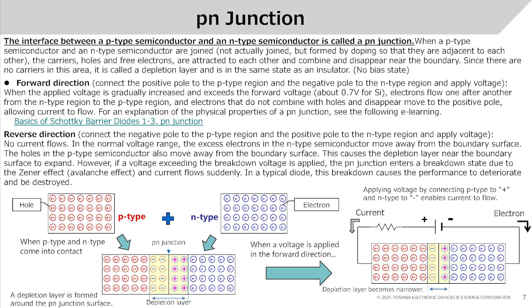No bias state. Forward direction: connect the positive pole to the p-type region and the negative pole to the n-type region and apply voltage. When the applied voltage gradually increases and exceeds the forward voltage (about 0.7 V for silicon), electrons flow one after another from the n-type region to the p-type region, and electrons that do not combine with holes move to the positive pole, allowing current to flow. For a detailed explanation of p-n junction physical properties, see the related e-learning: Basics of Schottky Barrier Diodes 1 to 3, P-N Junction.